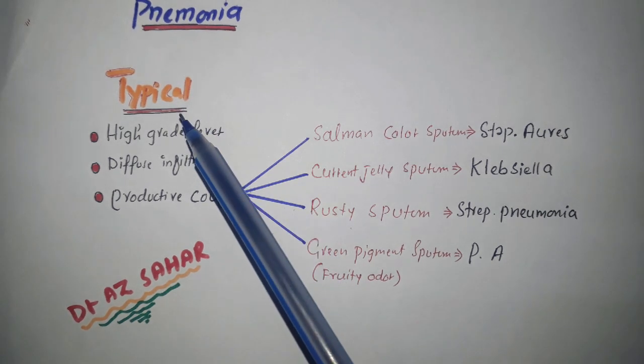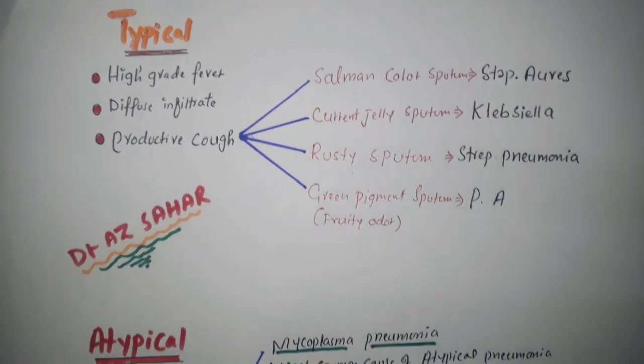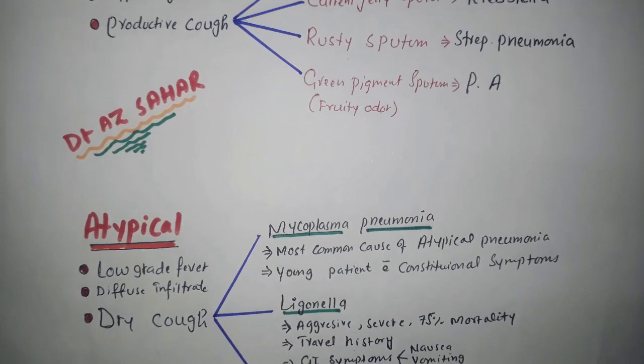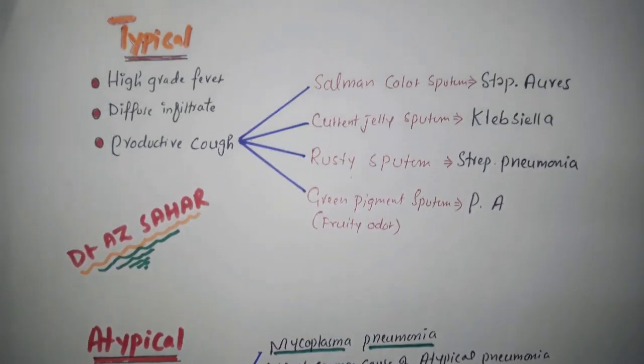Pneumonia consists of two types: one is called typical and another is called atypical.